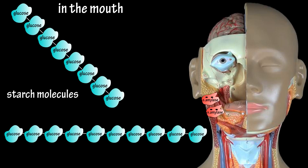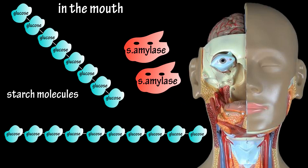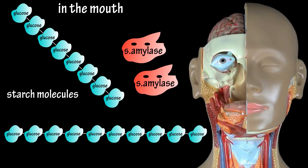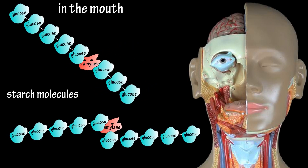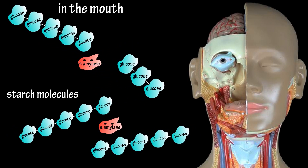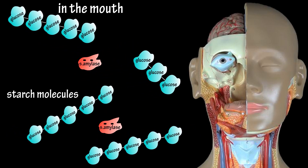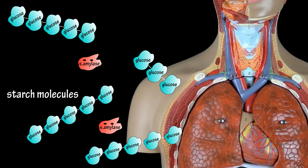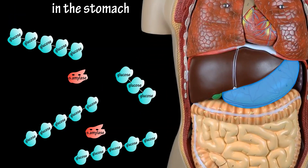In the mouth, salivary glands release salivary amylase, which is an enzyme that starts breaking down starch molecules. Starch is a polysaccharide molecule that contains a large number of glucose units bonded together, and it is found in many foods including rice and potatoes. Once the food or bolus is swallowed and enters the stomach, the low pH of the stomach inactivates the salivary amylase. There's virtually no digestion of disaccharides until they reach the small intestine.